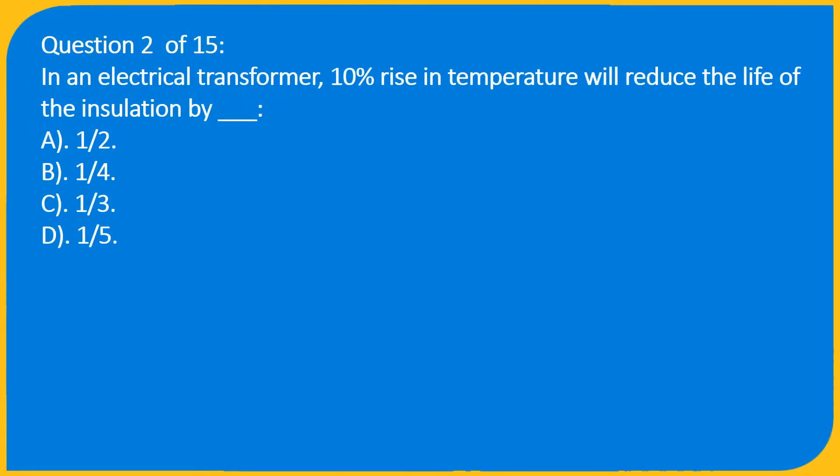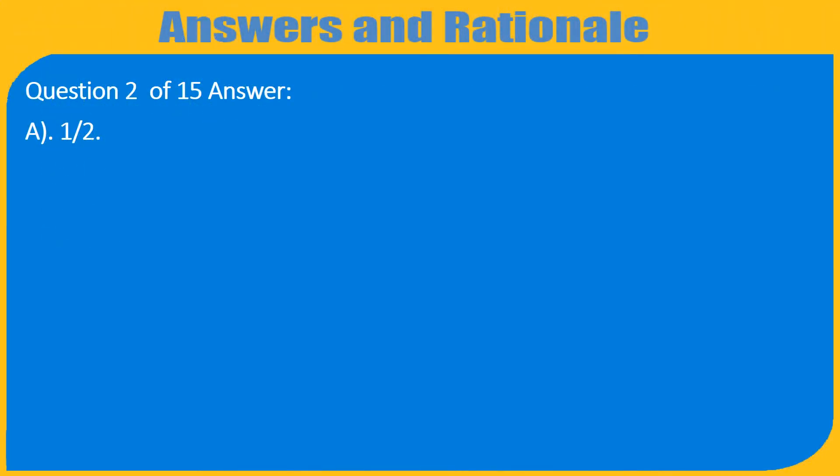Question 2 of 15: In an electrical transformer, a 10% rise in temperature will reduce the life of the insulation by ___. A. One half. B. One fourth. C. One third. D. One fifth. Answer: A. One half.